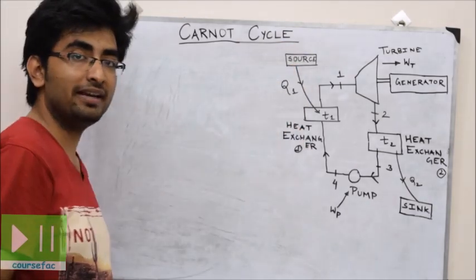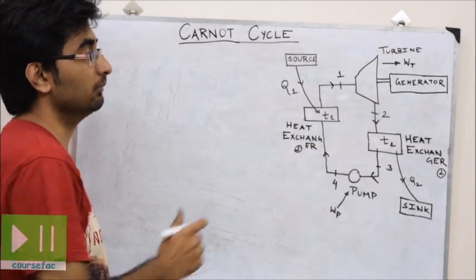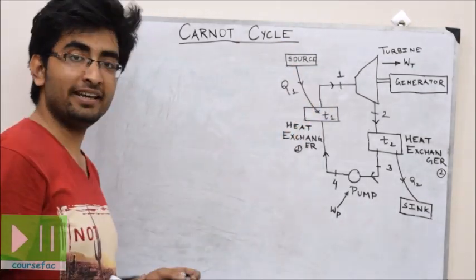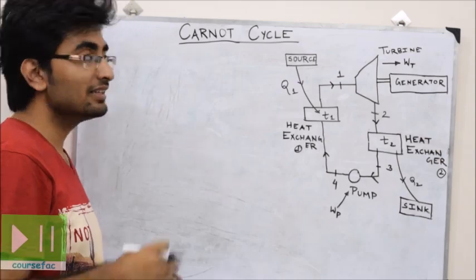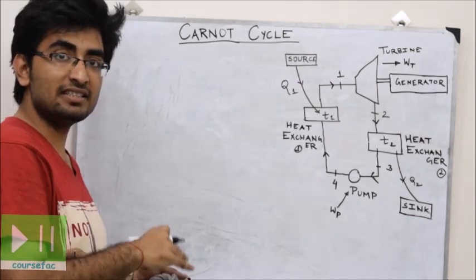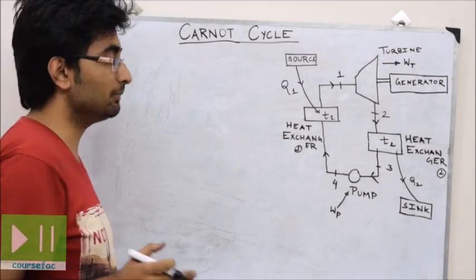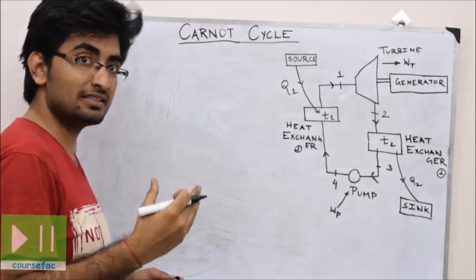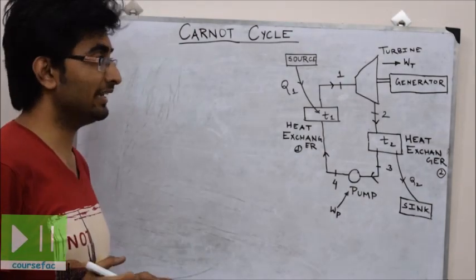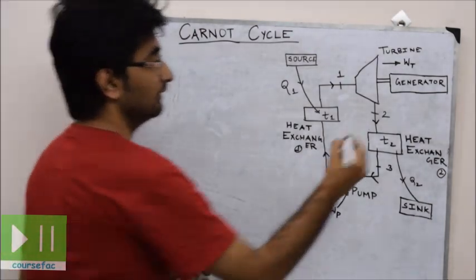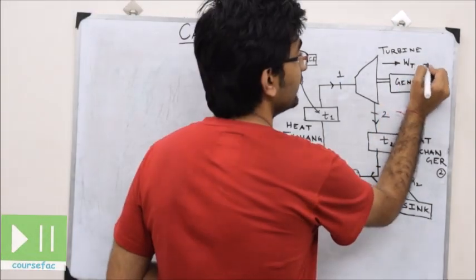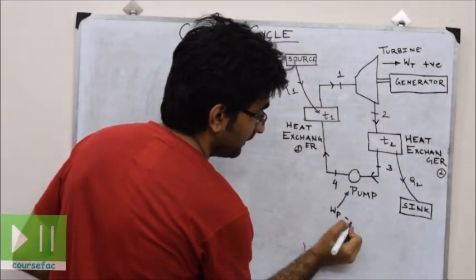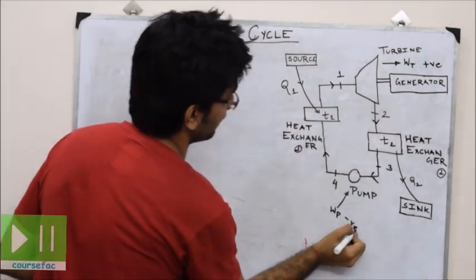In the turbine, work is achieved from the system, so work done is taken as positive since work is done by the system. In the pump, work is done on the system, so it is taken as negative. Work done by the turbine is positive and work done by the pump is negative.